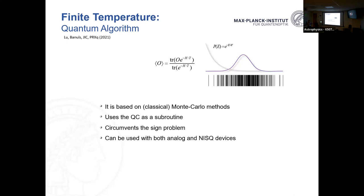For many many-body problems, you cannot efficiently compute these probabilities — that's the sign problem. Quantum Monte Carlo without the sign problem is a method of choice and works very well for many systems. However, my claim is that whenever you have a quantum Monte Carlo problem with a sign problem — meaning you cannot compute these probabilities classically — you can use a quantum computer as a subroutine to compute those probabilities, making the quantum Monte Carlo method sign-free.